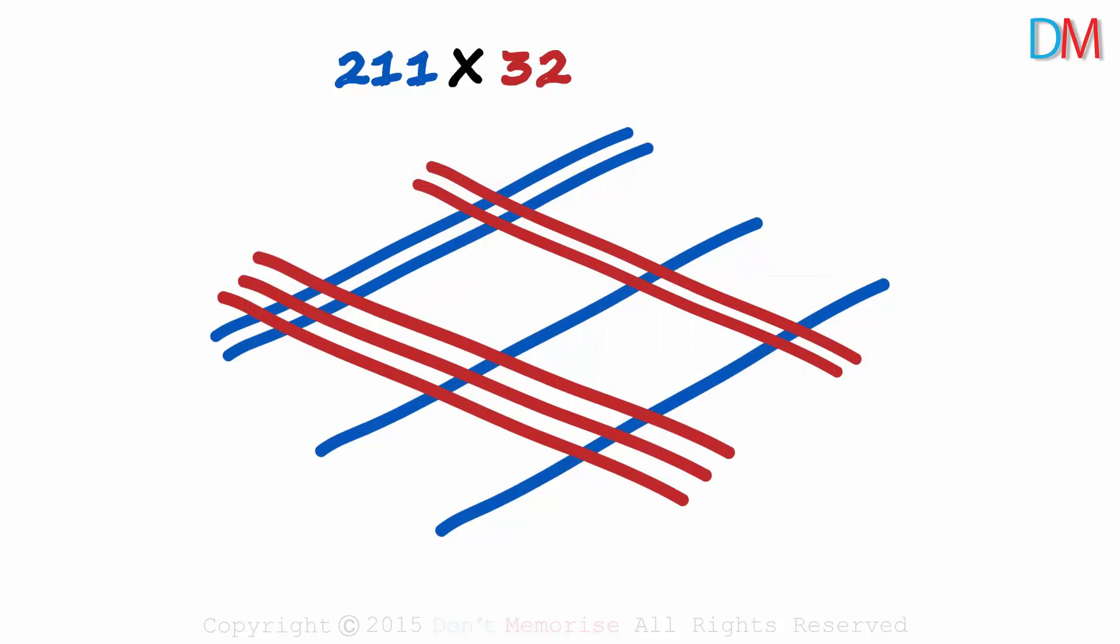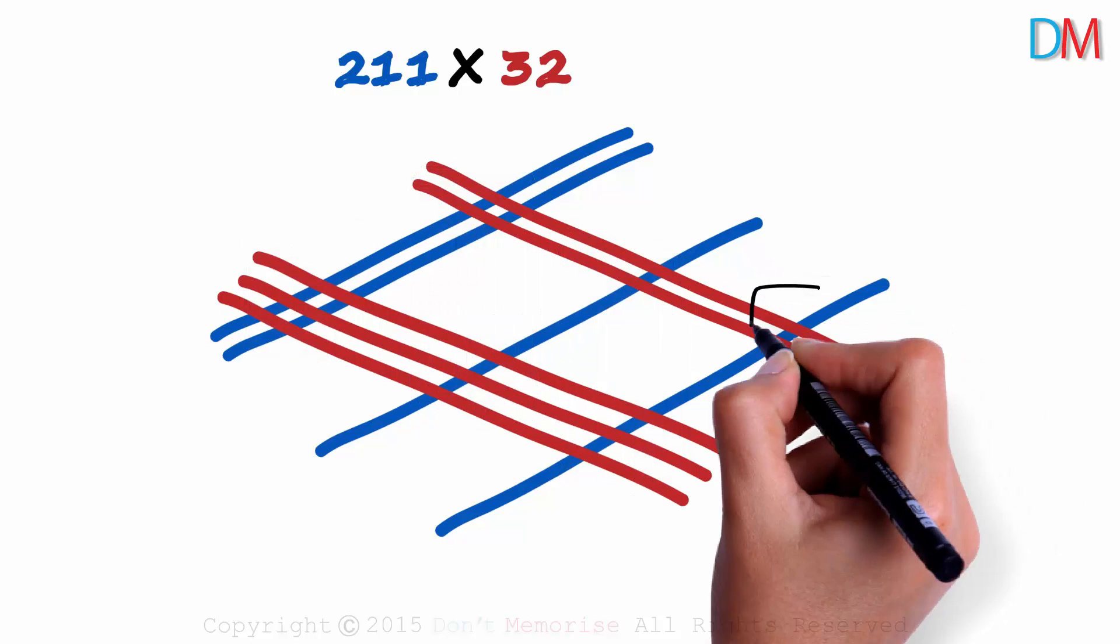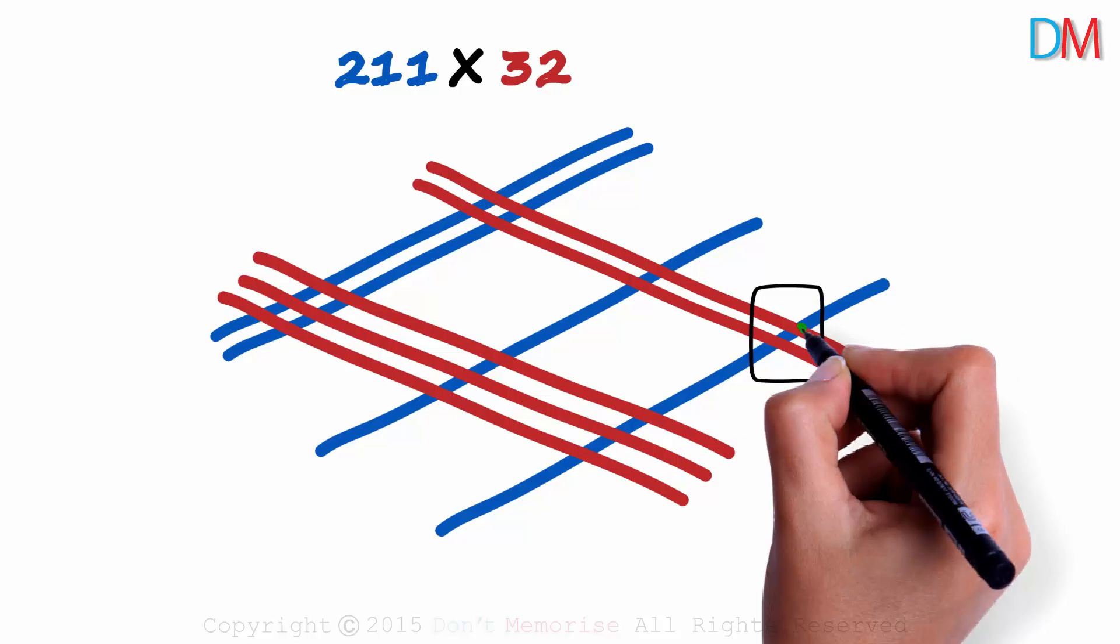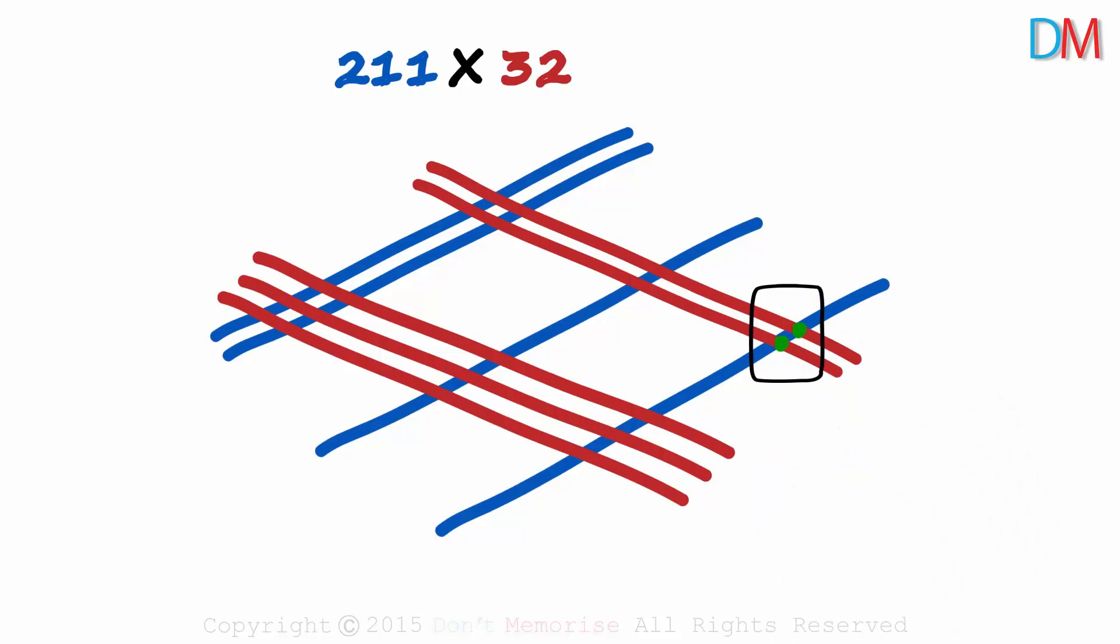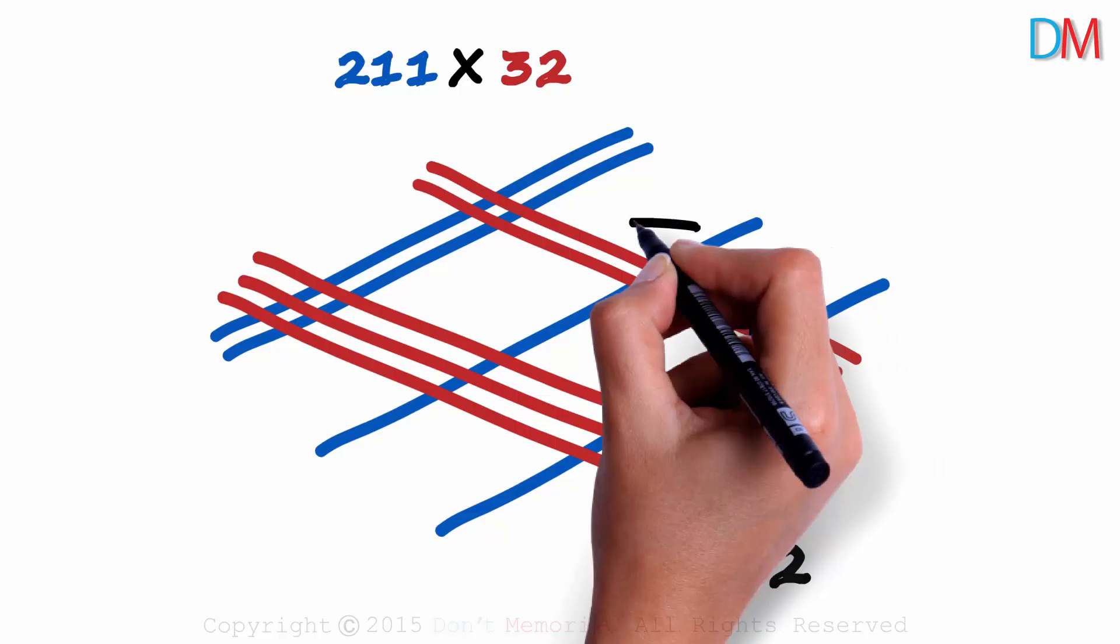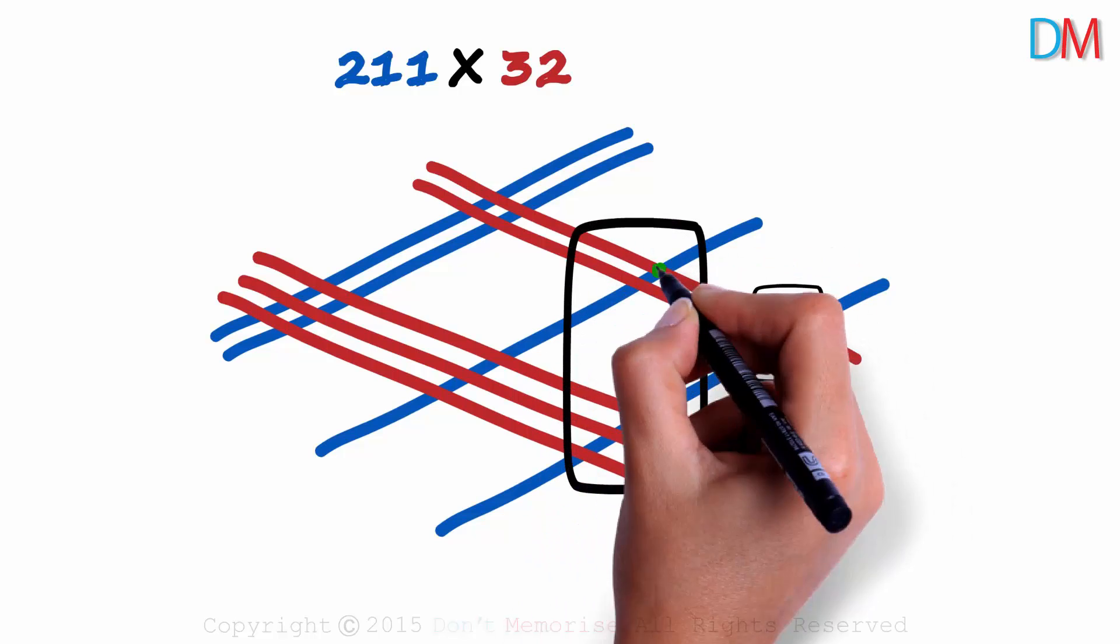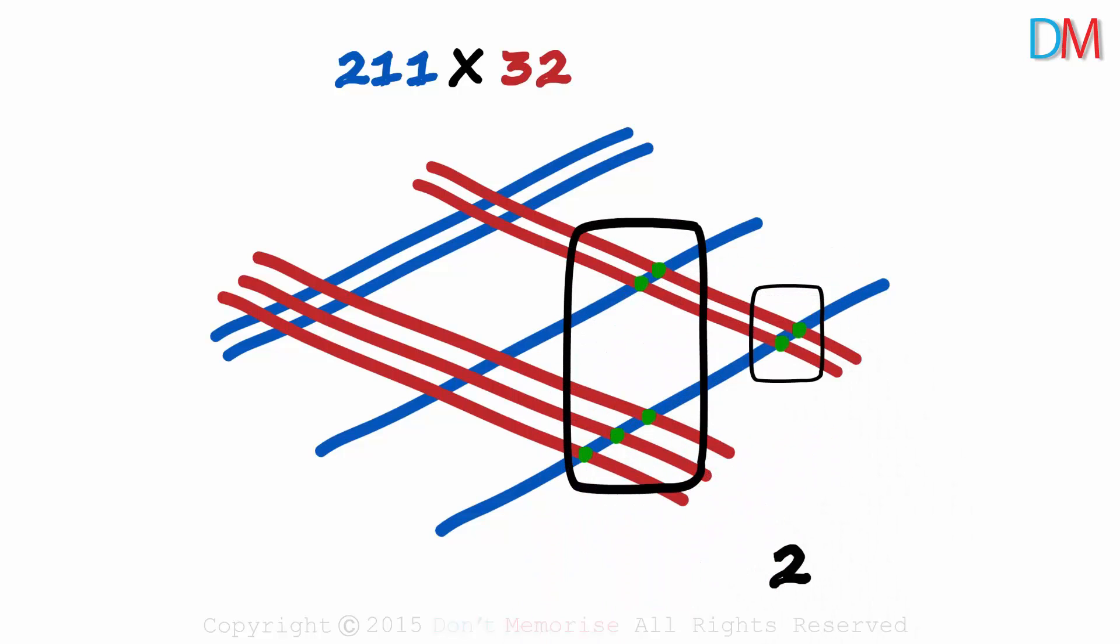The process remains unchanged though. We start with the zone at the extreme right. Two intersections, we write a two. Then we move on to the second zone. Two at the top and three at the bottom. Five in all.